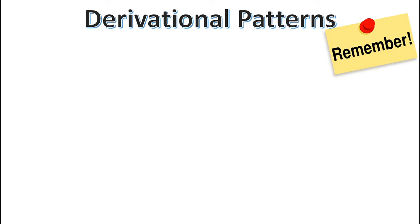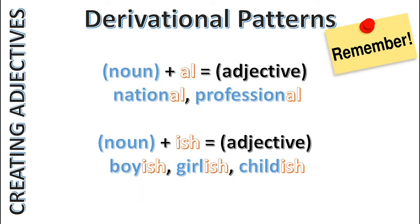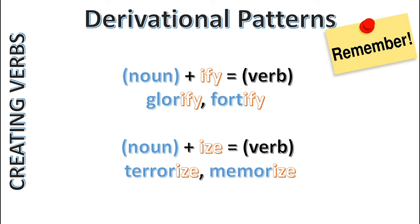Here are some examples of derivational affixes that result in the formation of a noun — also called nominalization. The affix -ness can attach to an adjective to form a noun, as in 'kindness,' 'greatness,' or 'quickness.' The affix -ity can also attach to an adjective to form a noun, as in 'rigidity,' 'complexity,' or 'humidity.' And -ion or -tion can attach to a verb to create a noun, as in 'participation' and 'complication.' The affix -al can attach to a noun to form an adjective, as in 'national' or 'professional.' The affix -ish can attach to a noun to create an adjective, as in 'boyish,' 'girlish,' or 'childish.' The affix -ify can attach to a noun to create a verb, as in 'glorify' or 'fortify,' and the affix -ize can attach to a noun to create a verb, as in 'terrorize' or 'memorize.'